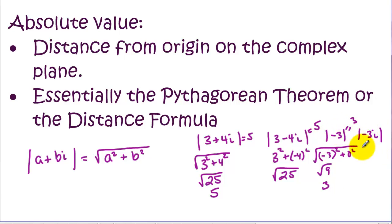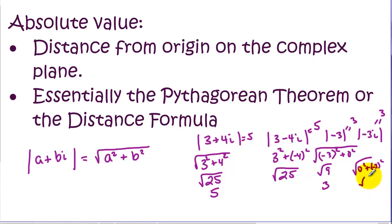For a purely imaginary number like negative 3i, the absolute value is the square root of 0 squared plus negative 3 squared, which is the square root of 9, or 3. Good luck when you practice these operations. In the next video, we'll be using complex numbers to go back and solve quadratic equations that used to have no solution — because now all of those quadratics are going to have solutions using complex numbers.